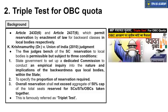In simple terms, the state government must first appoint a commission whose job is to study whether OBCs are not getting representation in local bodies without reservation — meaning whether they cannot win elections on their own in municipalities or panchayats. Only if they cannot should reservation be provided. If they are already winning elections and have good representation in local bodies, then there is no point in providing reservation.